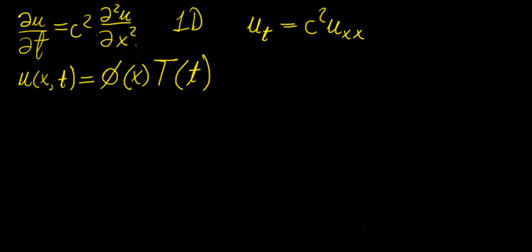Obviously, not all partial differential equations are separable, so this method doesn't work for all of them — in the same way that not all ordinary differential equations are separable. But this allows us to develop a method that is relatively easy for finding the general solution to simple PDEs like this one. What we're going to do is find the derivatives and plug them into the equation, then reduce this to a system of ordinary differential equations. Because we have two variables, we want a system of two ODEs.